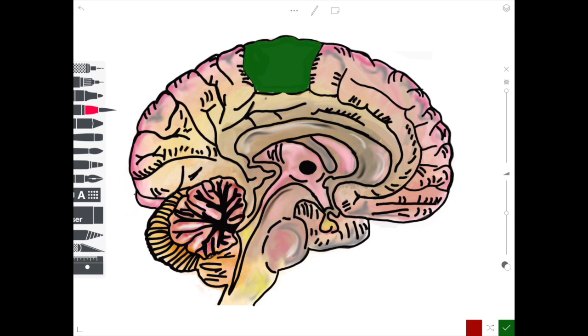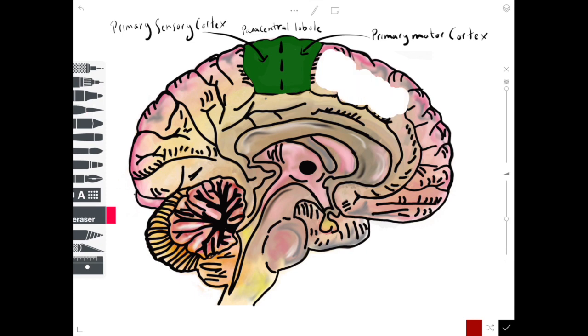As we now take a look at this medial surface we can see the area in green is called the paracentral lobule. This is effectively an overhanging segment of the primary motor cortex and the primary sensory cortex and is related to the lower limb.